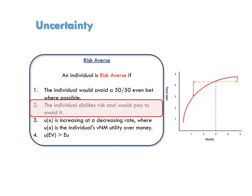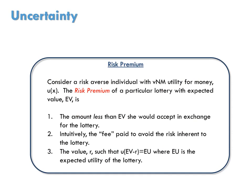What this video looks at is how much less than the expected value of a lottery a risk-averse person is willing to accept. With that in mind, there are three different ways that we can define or view the risk premium. First, it's the amount less than a lottery's expected value a risk-averse person would accept in exchange for the lottery. More intuitively, it's the fee paid to avoid the risk inherent to a lottery. Most specifically, a risk premium, or R, is the value such that the utility the consumer gets from EV minus R equals the expected utility of the lottery.